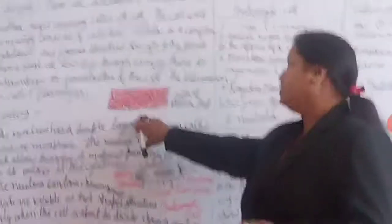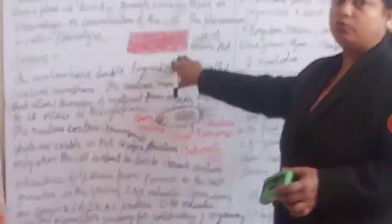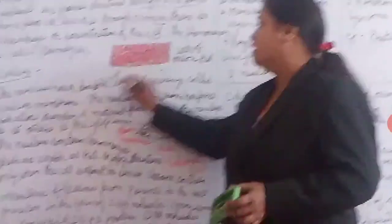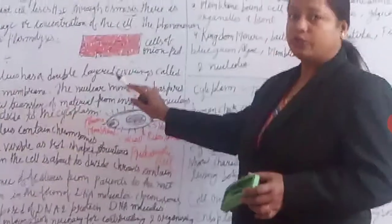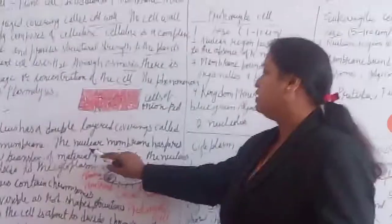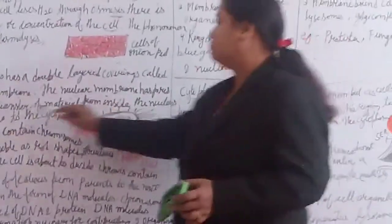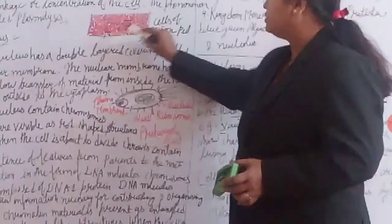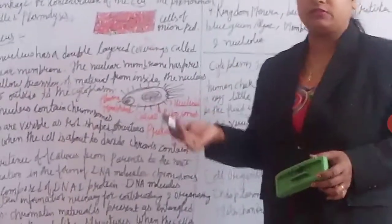In this paper, you can see the cells of onion look like this. The nucleus has a double layer covering called the nuclear membrane. The nuclear membrane has pores which allow transfer of material from inside the nucleus to outside the surface.